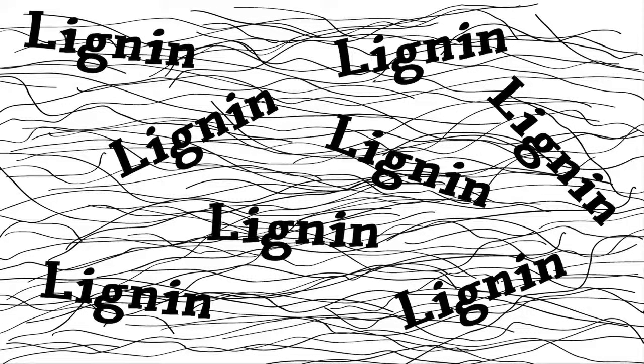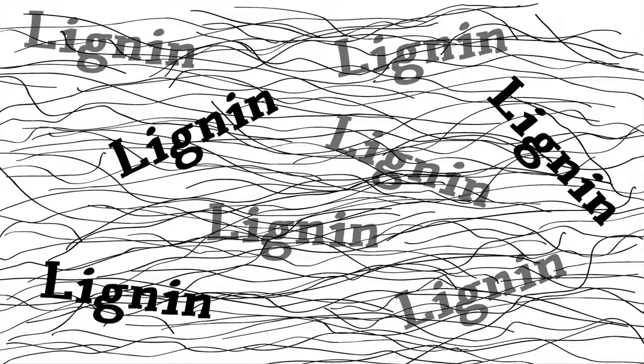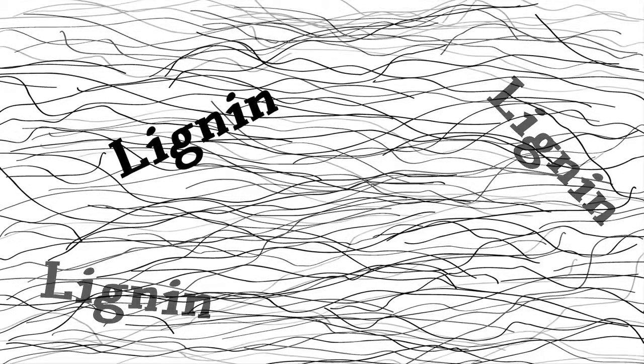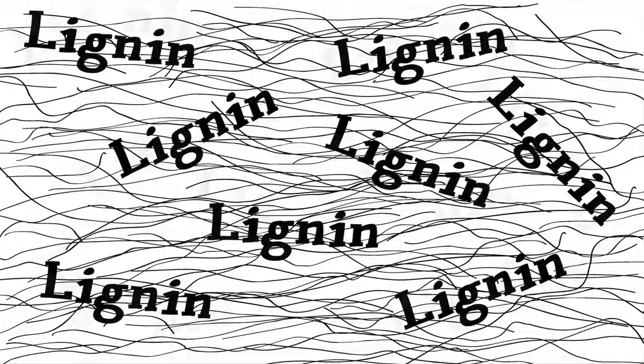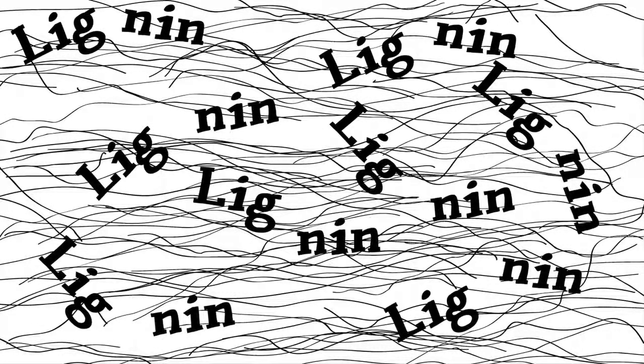Lignin is the substance that binds cellulose fibers together. It is removed, which is called delignification, during chemical pulping, or torn apart during mechanical pulping, in order for paper to be made.